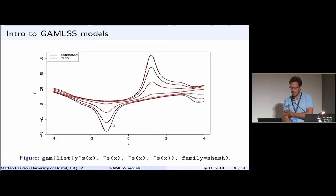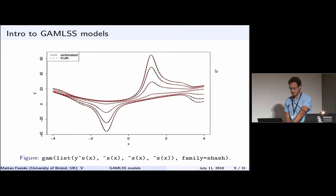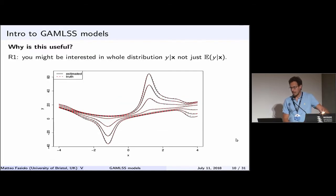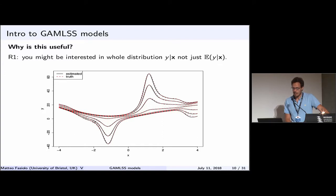By modeling each parameter as a smooth function you can get fairly complex behavior — skewness to the left here, skewness to the right there, variance also changing. One reason this is useful: when doing forecasting on quantiles you're not interested in just knowing how the expected value of Y changes with X, but you want a good idea of how the full distribution, or at least several quantiles, changes as you vary covariates.